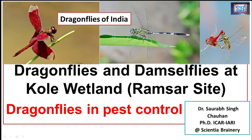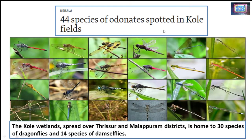It is also predicted that dragonflies may have a critical role in controlling insect pests which are harmful for various agricultural activities. Recently, this article was published in The Hindu: 44 species of Odonates spotted in the Kol wetland fields.